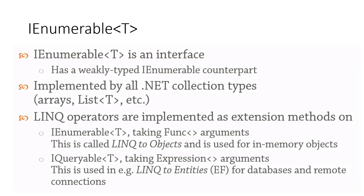IEnumerable is an interface that all LINQ objects must implement. The angle bracket T notation means it's a generic — a strongly typed interface because you tell it what type you're operating on. There is a weakly typed IEnumerable counterpart, but we're not going to cover that. IEnumerable is implemented by all .NET collection types, including arrays. Anytime you declare something such as an integer array, you'll automatically get the functionality from IEnumerable.